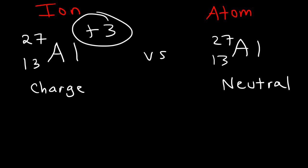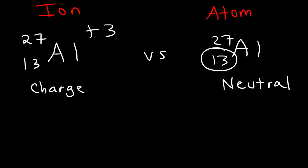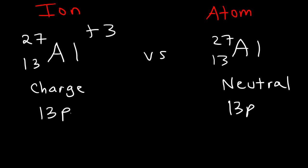A positively charged ion is known as a cation. A negatively charged ion is known as an anion. The atomic number is equal to the number of protons, so the aluminum atom and the aluminum cation both possess 13 protons. However, an ion differs from an atom based on the number of electrons. To calculate the number of electrons, it is equal to the atomic number minus the charge.